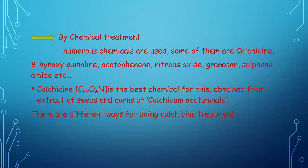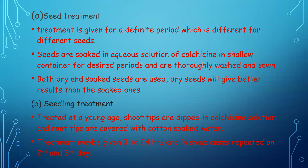There are different ways of applying colchicine treatment. The first is seed treatment, where seeds are soaked in an aqueous solution of colchicine in shallow trays for a definite period, which differs for different species. Then they are thoroughly washed and sown. Both dry and soft seeds are used, but studies show that dry seeds give better results than soft ones.